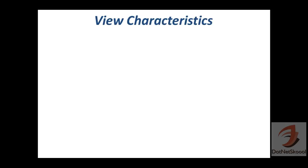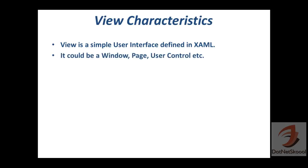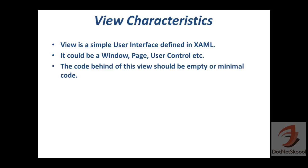Let's understand the characteristics of the View. The View is a simple user interface defined in XAML. Whatever you see in front of your eyes — the UI or GUI — that is the View. It could be a Window, a Page, or a User Control. The code behind of this View should be empty or contain only minimal code.